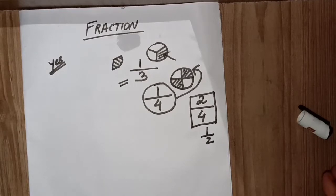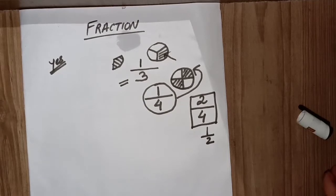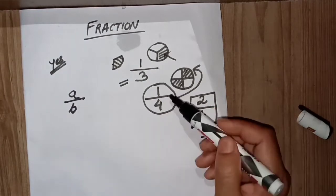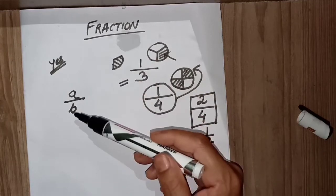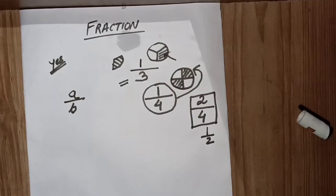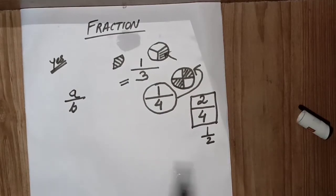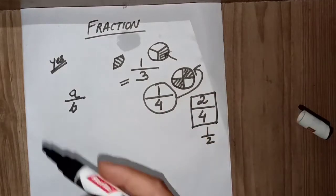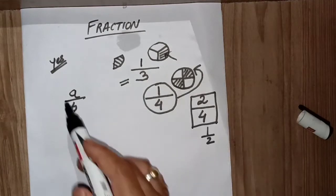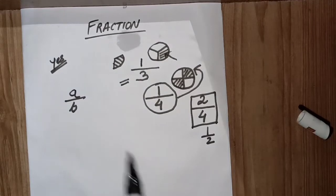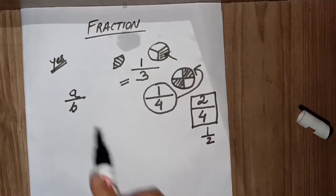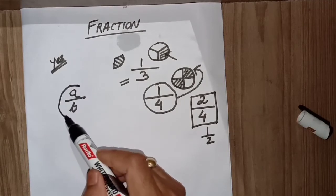Now, following the definition of fraction: a fraction can be written in the form of a by b, where a and b are variables. Variables can vary — their values are not constant. For a particular equation the value of a can be one, for another equation a can be two — that is why they are called variables. The fraction is represented in the form of a by b.